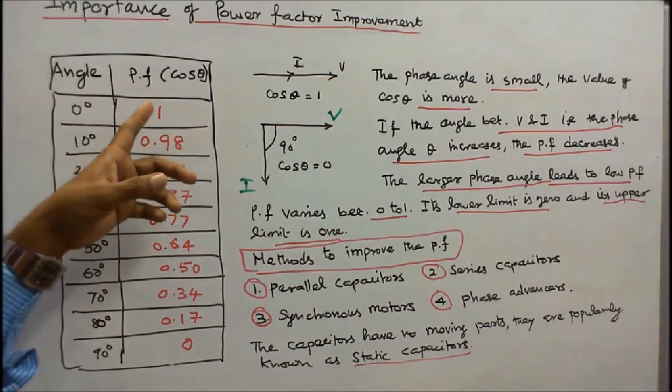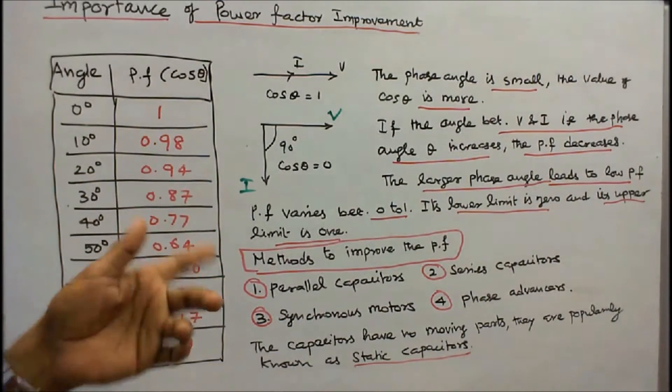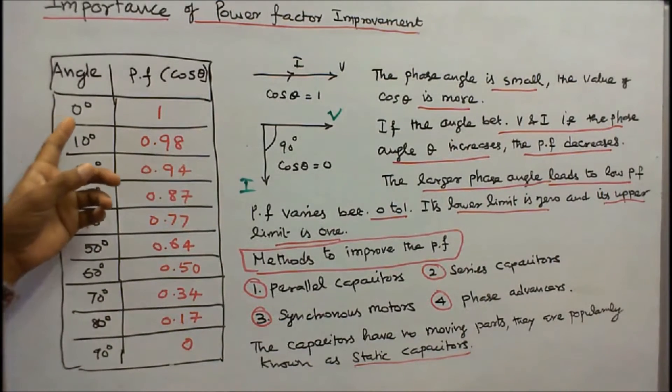Angle power factor: Power factor is nothing but cosine of the angle between voltage and current. Cos 0 equals 1.